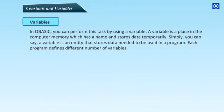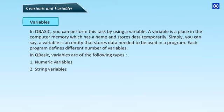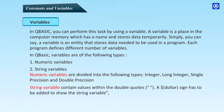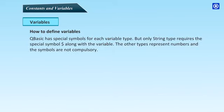Variables: In QBasic you can perform this task by using a variable. A variable is a place in the computer memory which has a name and stores data temporarily. Simply you can say a variable is an entity that stores data needed to be used in a program. Each program defines different numbers of variables. In QBasic variables are of following types: numeric variables and string variables. Numeric variables are divided into the following types: integer, long integer, single precision and double precision. String variables contain values within the double quotes. A dollar sign has to be added to show the string variable. Items$ = "keyboard".